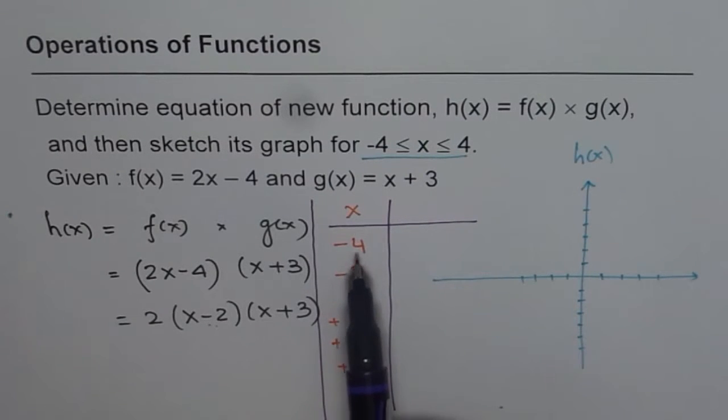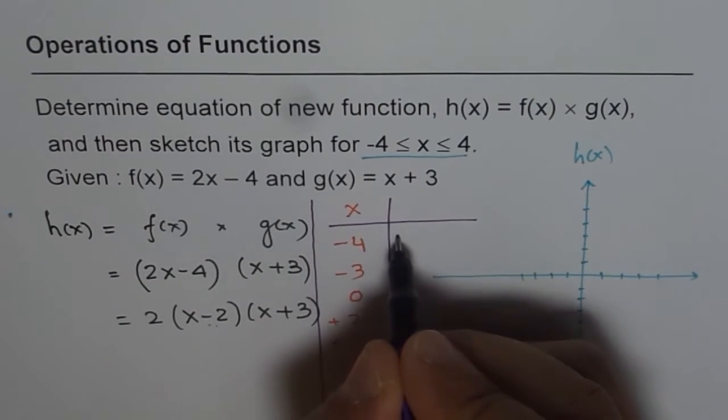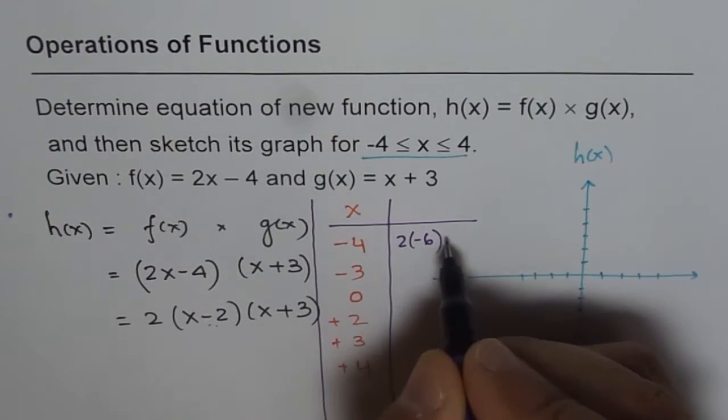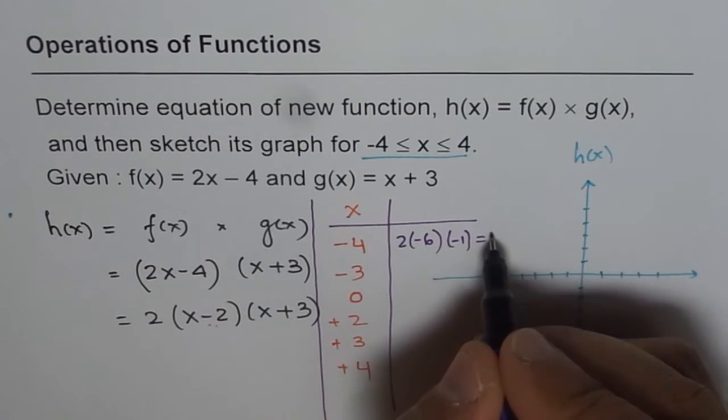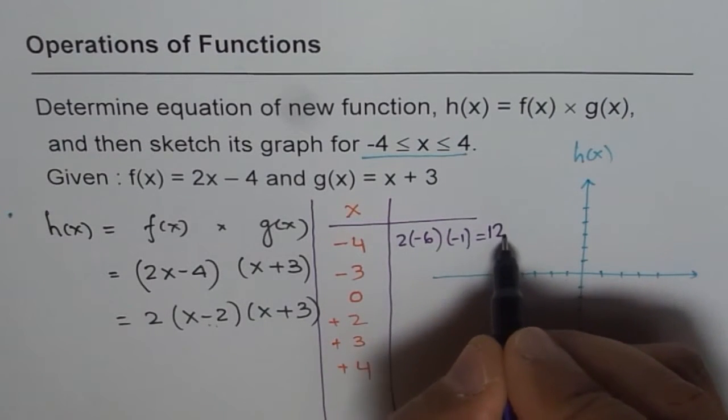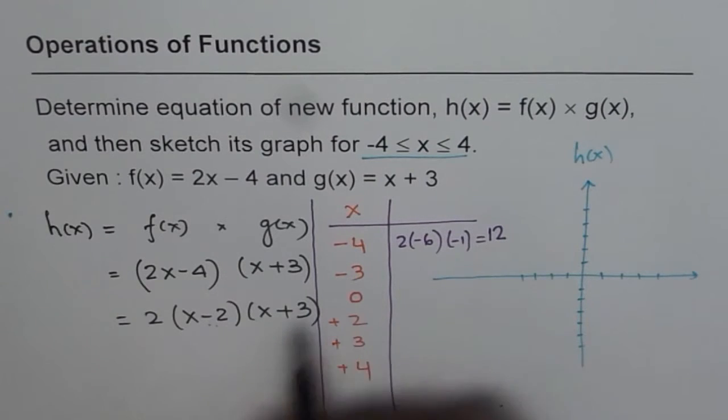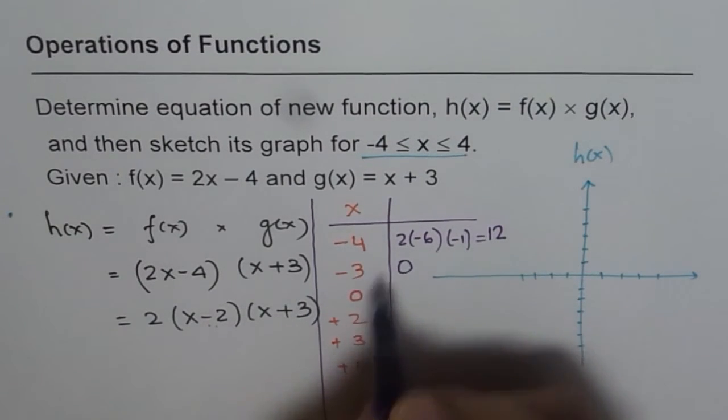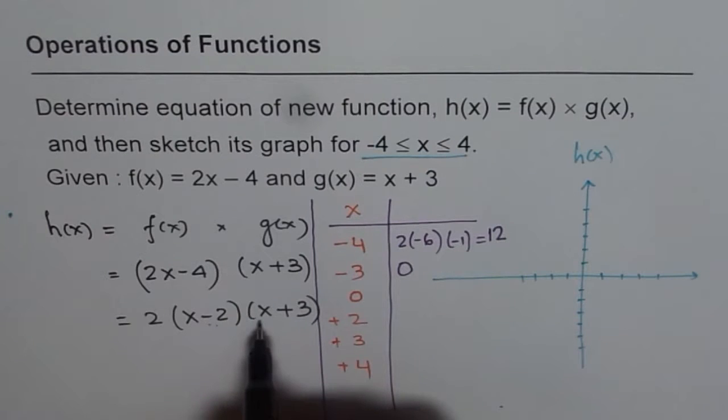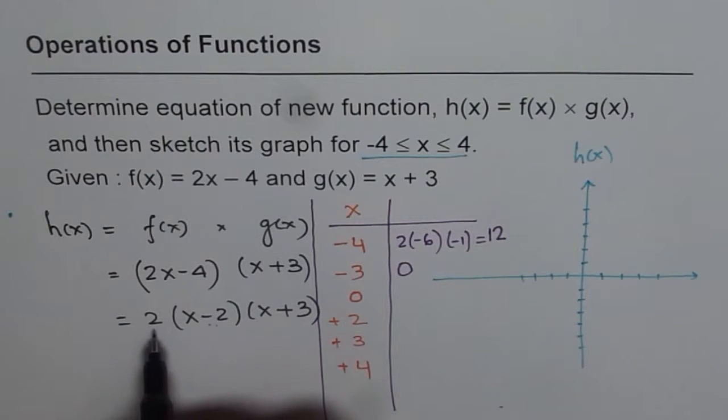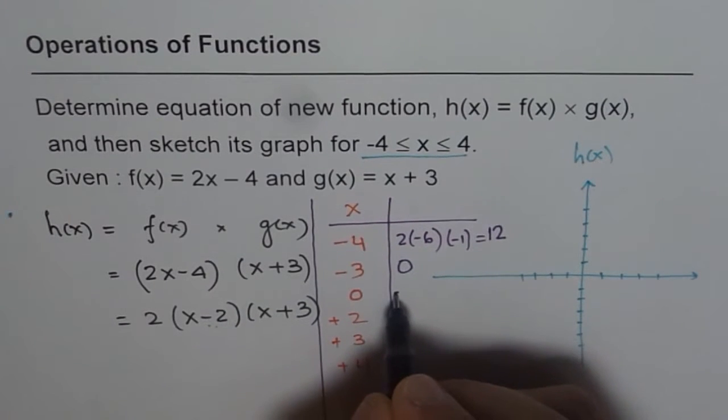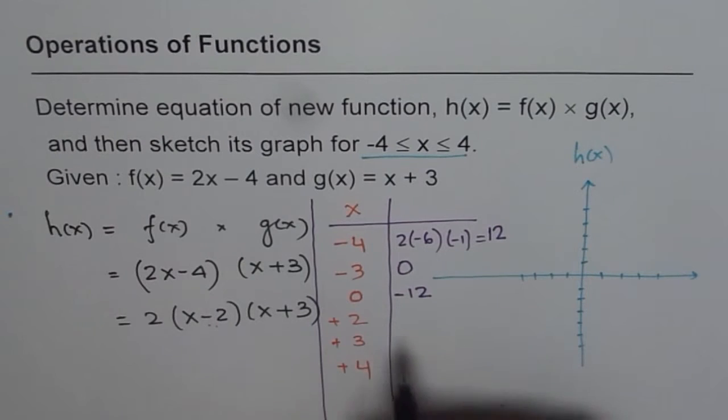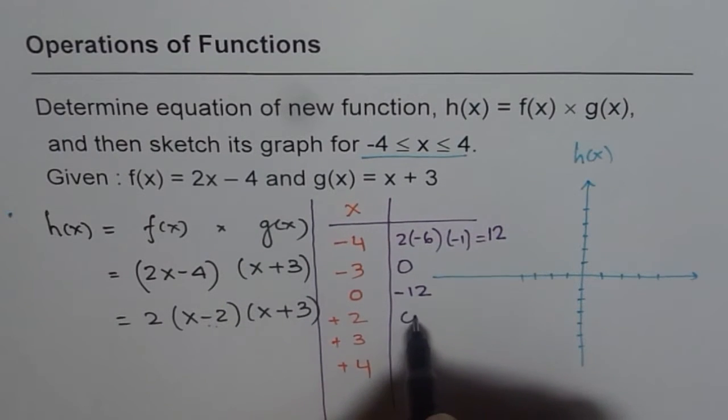Starting with minus 4. So at minus 4 this will be minus 6. So we have 2 times minus 6 and that will be minus 1. So this gives us a value of 12 positive. So this is 12. Now for the second one minus 3 we know it is 0. If I put 0 here for x then I have 2 times minus 2 which is negative 4, times 3 is 12 with a negative sign. So we have minus 12. For 2 again it will be 0.